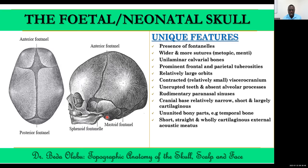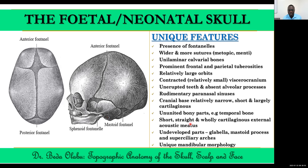Some parts of the neonatal skull have not fully developed — in particular, the glabella, the mastoid process (part of the temporal bone), and the superciliary arches above the eyes. These parts are not present in the neonatal skull but are formed and visible in the adult skull. Try to confirm these things when looking at the skull of an adult.